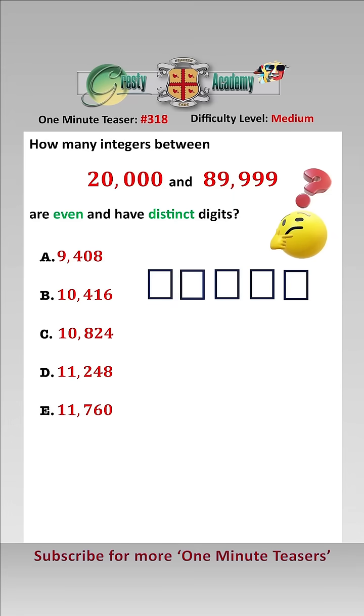To solve this, we need to look at the restrictions. As the number has to be even, then the last digit has to be 0, 2, 4, 6, or 8.